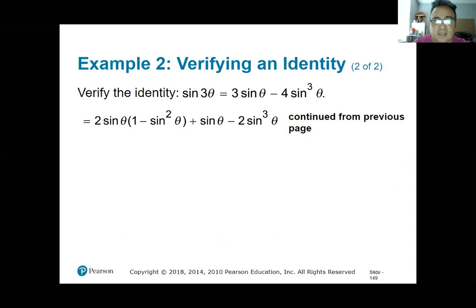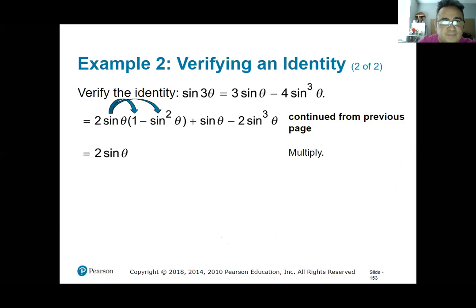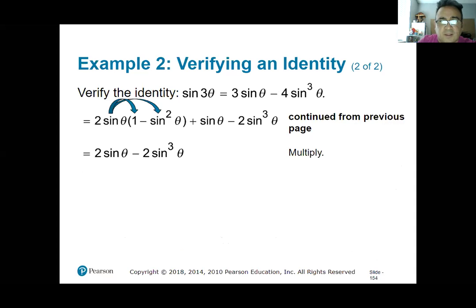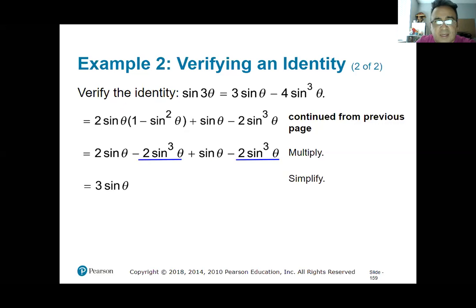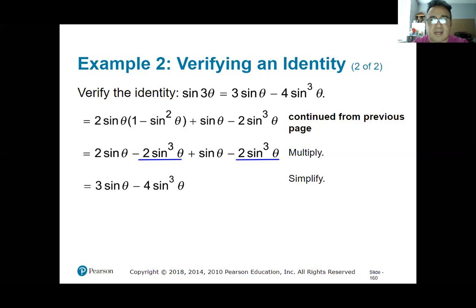Now multiply: 2 sine theta times 1 gives 2 sine theta, and 2 sine theta times sine squared theta gives minus 2 sine cubed theta. Plus the sine theta I already had. Combining like terms: 2 sine theta plus sine theta is 3 sine theta, and minus 2 sine cubed theta minus 2 sine cubed theta is minus 4 sine cubed theta. That's exactly what we were trying to show — identity verified.